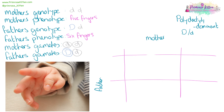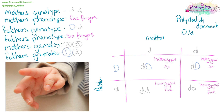Polydactyly is a condition where people get six little fingers, and it is dominant. Here we have a mother who is homozygous recessive with five fingers, and a father who is heterozygous dominant with six fingers. Filling in the genetic cross, we can see that if a parent has one dominant gene for this condition, they'll pass it on and the offspring has a 50% chance of also having polydactyly.